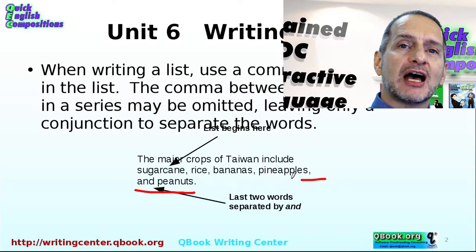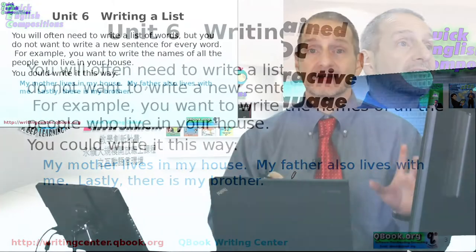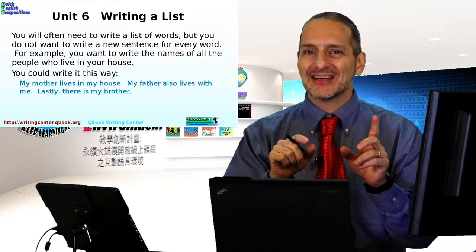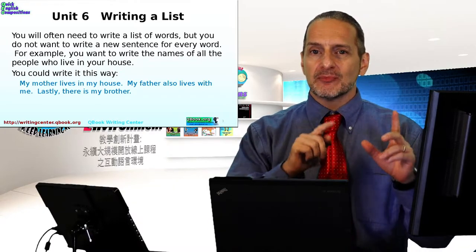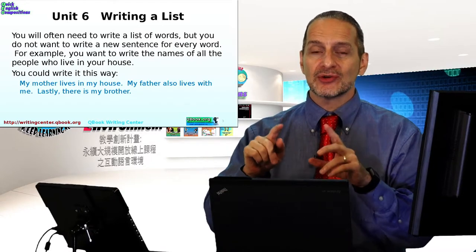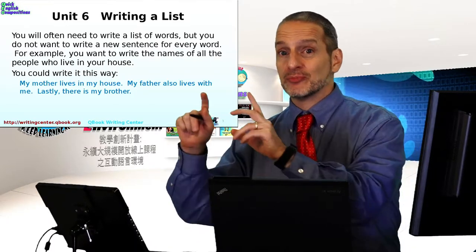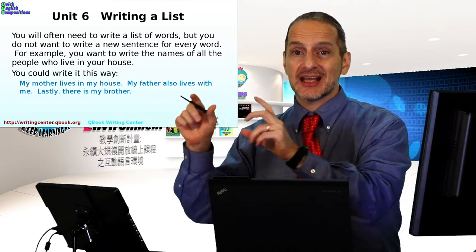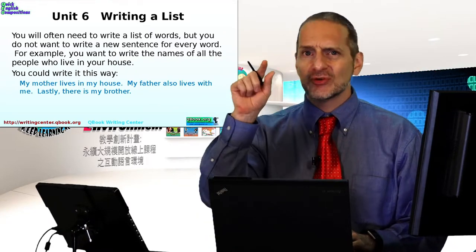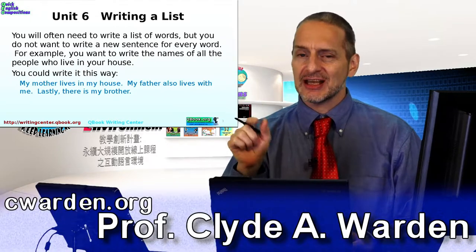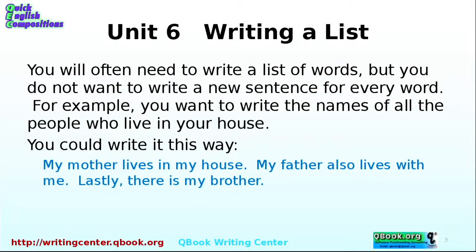It's very important to keep the comma before that final 'and.' The reason is that sometimes a list has two things joined with 'and' that belong together. For example: Bill likes to eat pizza and coke, hamburgers and french fries, jello and pudding. That gets very confusing — is it two things together, or just the last two separate? So I suggest you always use the comma before the final 'and' in a list.